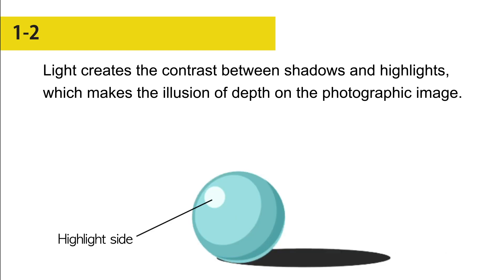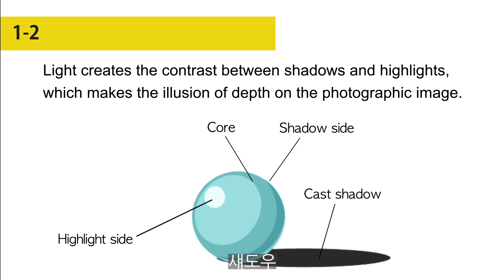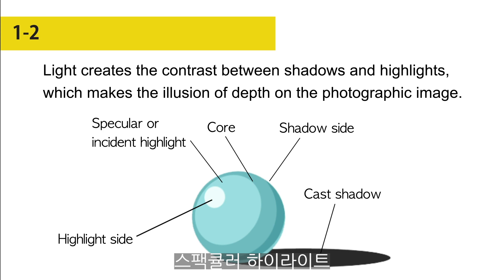First, a highlight is created. A cast shadow is created. A core is created in the transition of the highlight and the shadow. A shadow side is created. A specular or incident highlight is created with the highlight.